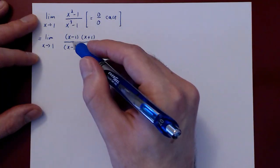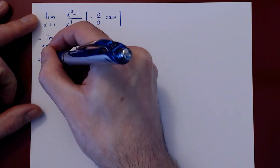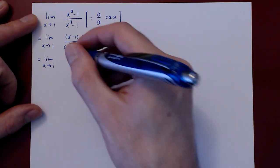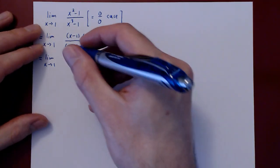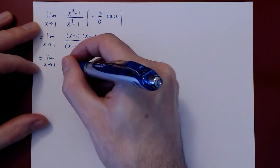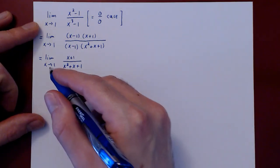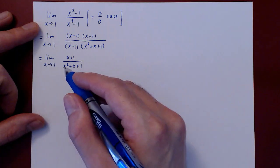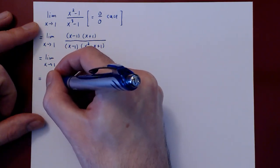The ratio of x minus 1 over itself cancels to 1, so the expression simplifies to x plus 1 over x squared plus x plus 1. As x approaches 1, the numerator approaches 2, the denominator approaches 3, and so the limit is simply 2 over 3.